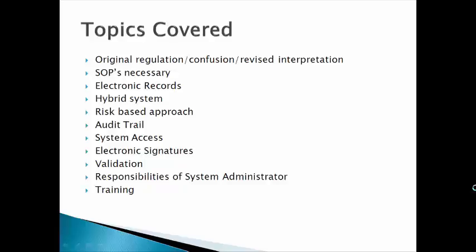We're going to talk today about the original regulation, which led to a lot of confusion, and the later FDA interpretation. We'll discuss the SOPs that are necessary to have a procedurally compliant system. We'll discuss the criteria for electronic records. We'll talk about a hybrid system, which is part paper, part electronic. We'll discuss the risk-based approach to compliance, what an audit trail is and the criteria to have an audit trail, system access requirements, electronic signatures, validation, the responsibilities of the system administrator — who is an important person in this situation — and the training that's required to be Part 11 compliant.